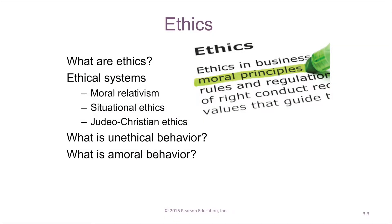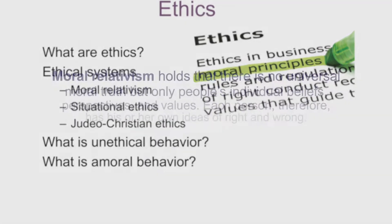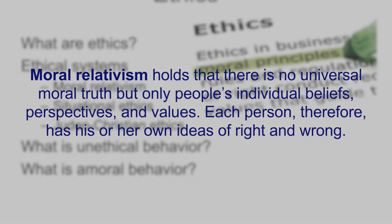There are different systems. Moral relativism holds that there's no universal moral truth — universally we cannot say something is right or wrong. It's only people's individual beliefs, perspectives, and values. Each person has his own set of ideas in terms of what is right or what is wrong related to something.